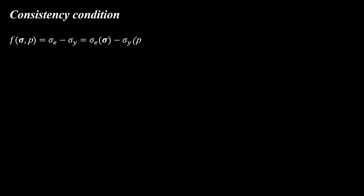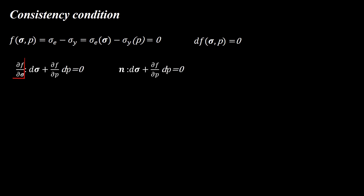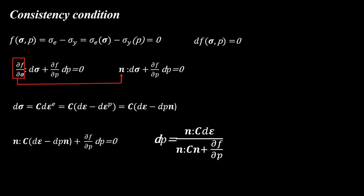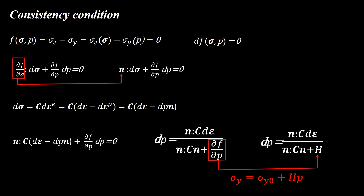In plastic deformation the yield function is zero, so its variation is also zero. We express the variation of the yield function based on increments of stress and effective plastic strain, then replace derivatives of the yield function with respect to stress by N. Stress increment is calculated by multiplying the elastic stiffness tensor by the elastic strain increment, which is the total strain increment minus the plastic strain increment. Substituting into the consistency equation and solving gives the value of dp. For isotropic linear hardening, the derivative of the yield function with respect to effective plastic strain is replaced by the hardening slope. Please watch our next videos about the algorithm and UMAT subroutine for Mises plasticity.